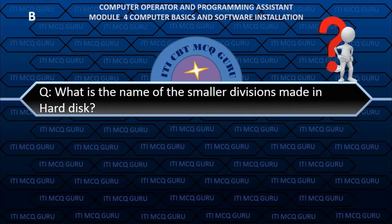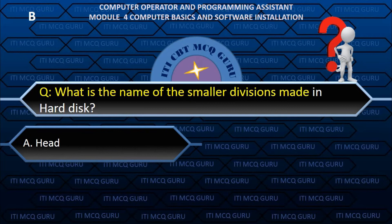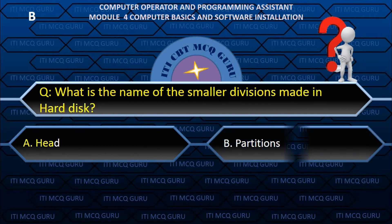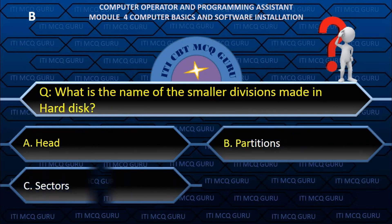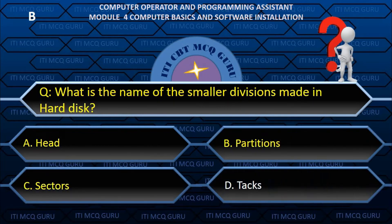What is the name of the smaller divisions made in a hard disk? — B. Partitions.